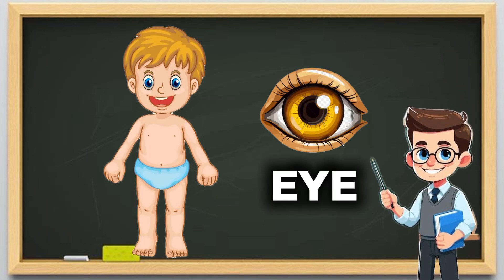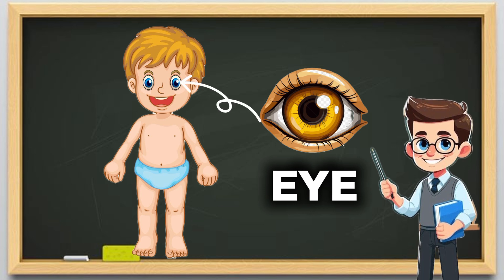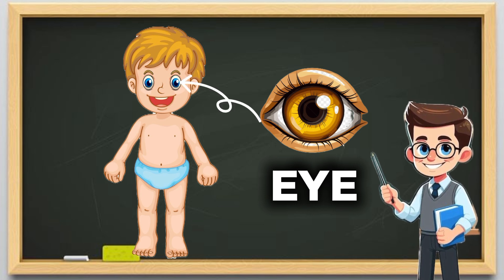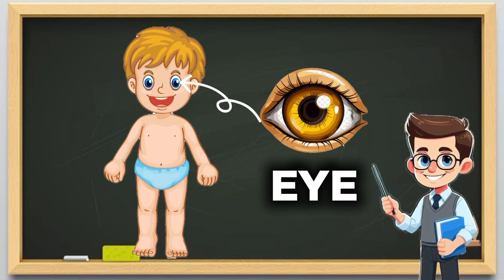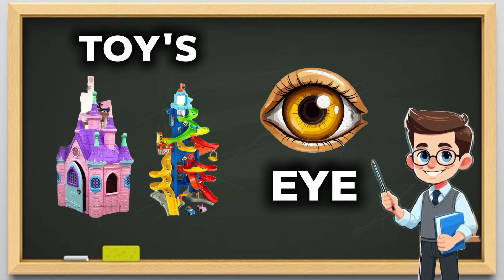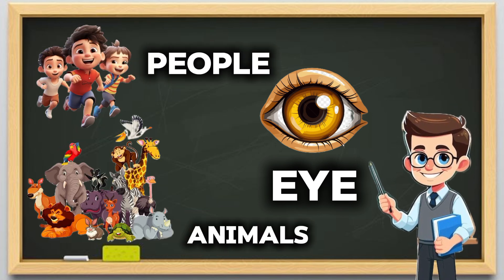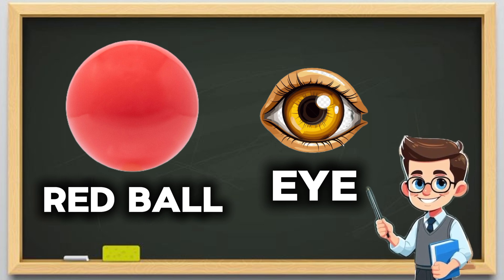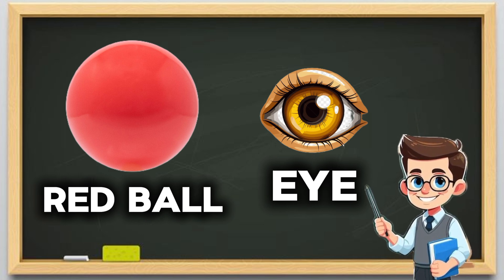1. Sight. Eyes. These are our eyes. We use our eyes to see. We can see colors, toys, people, and animals. I see a red ball. Can you see something red near you?